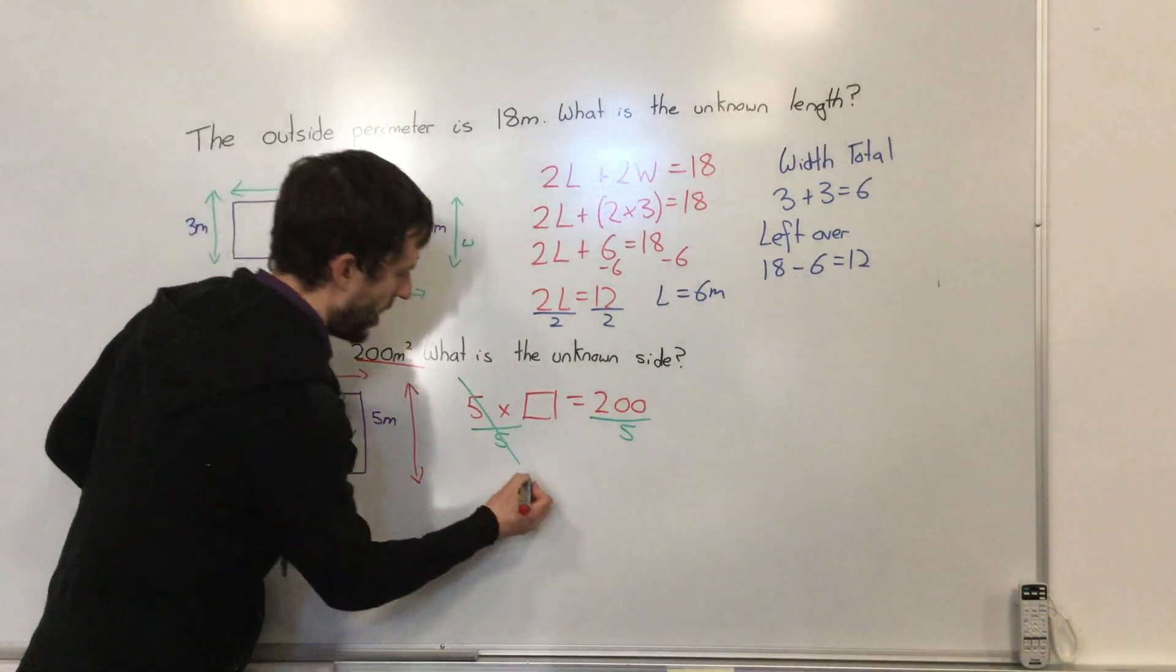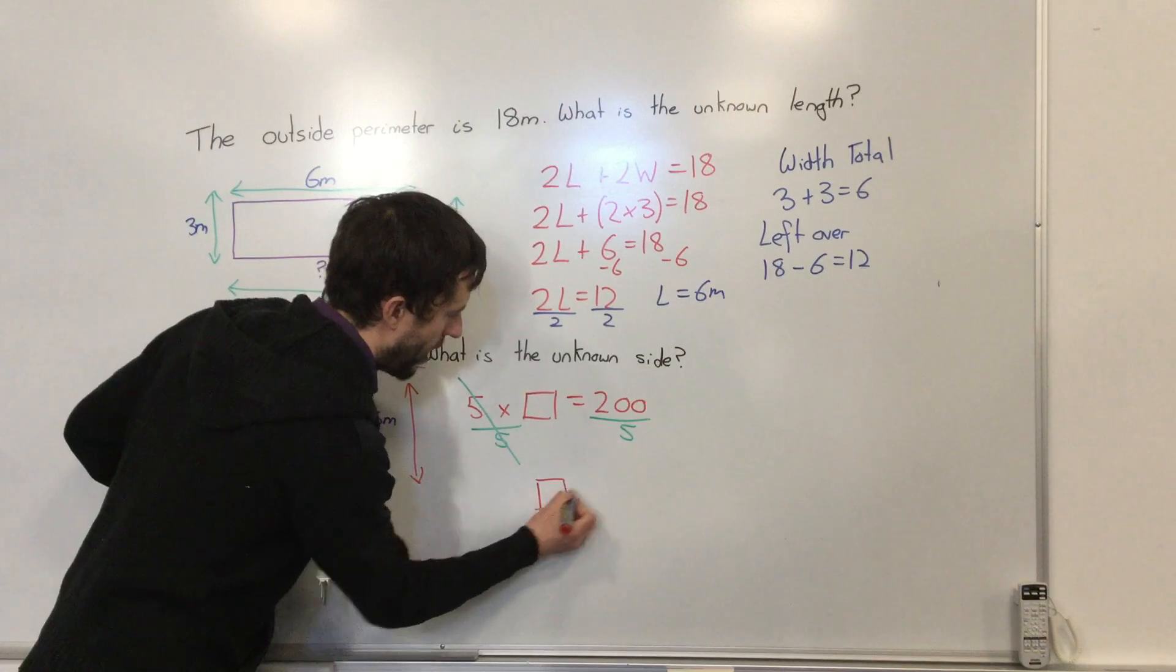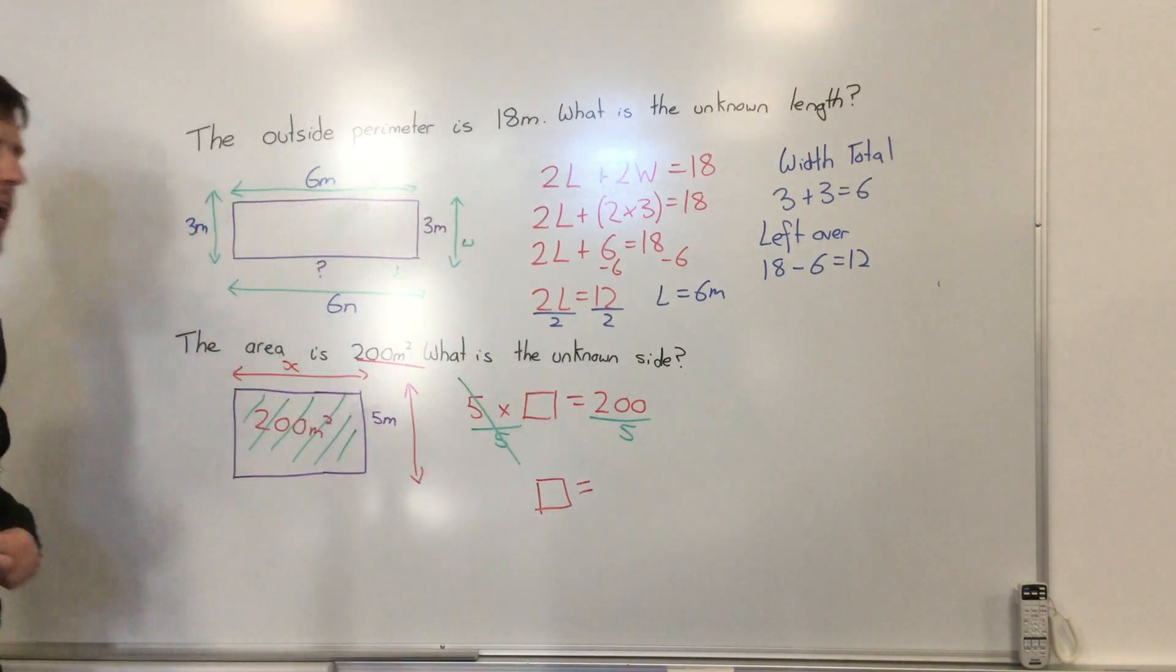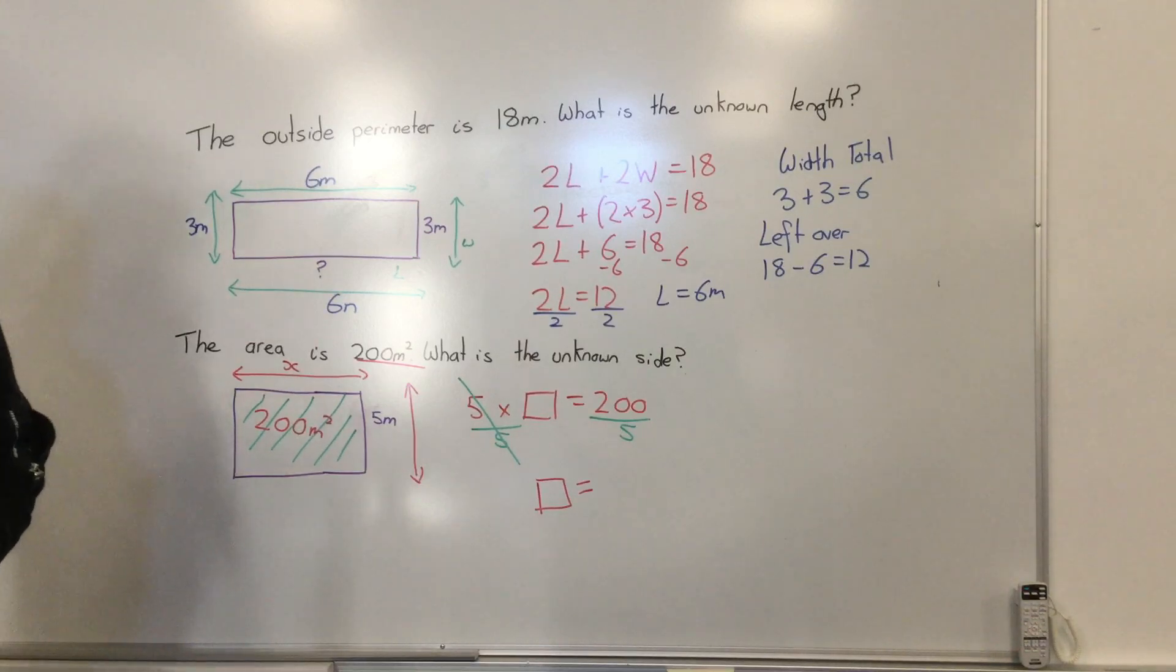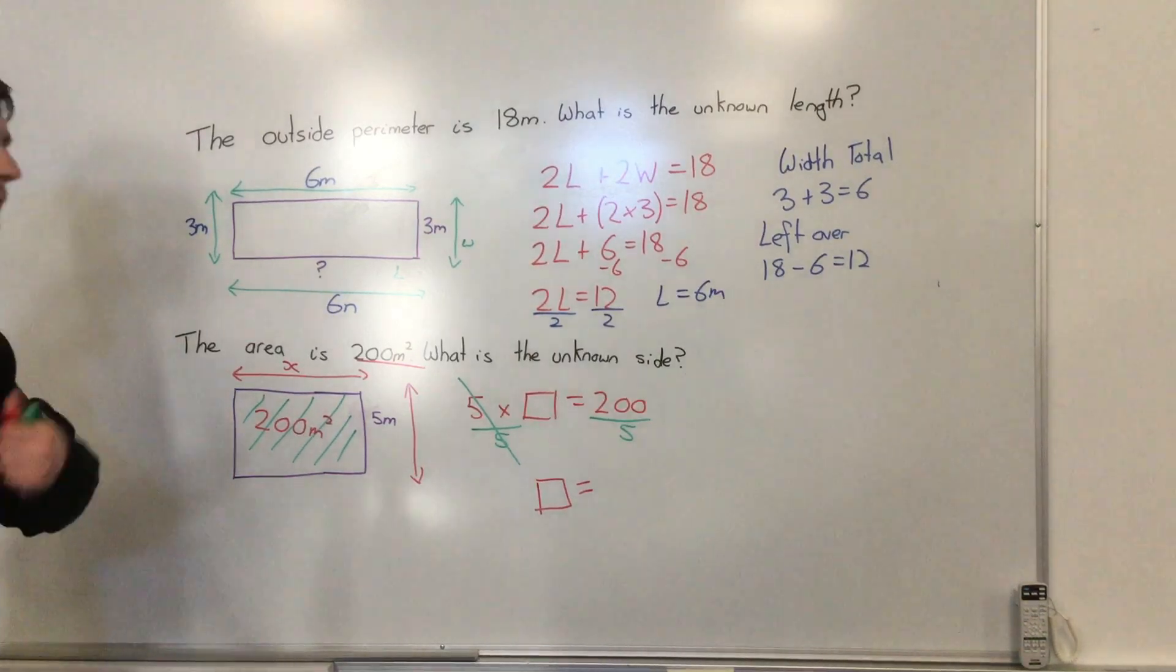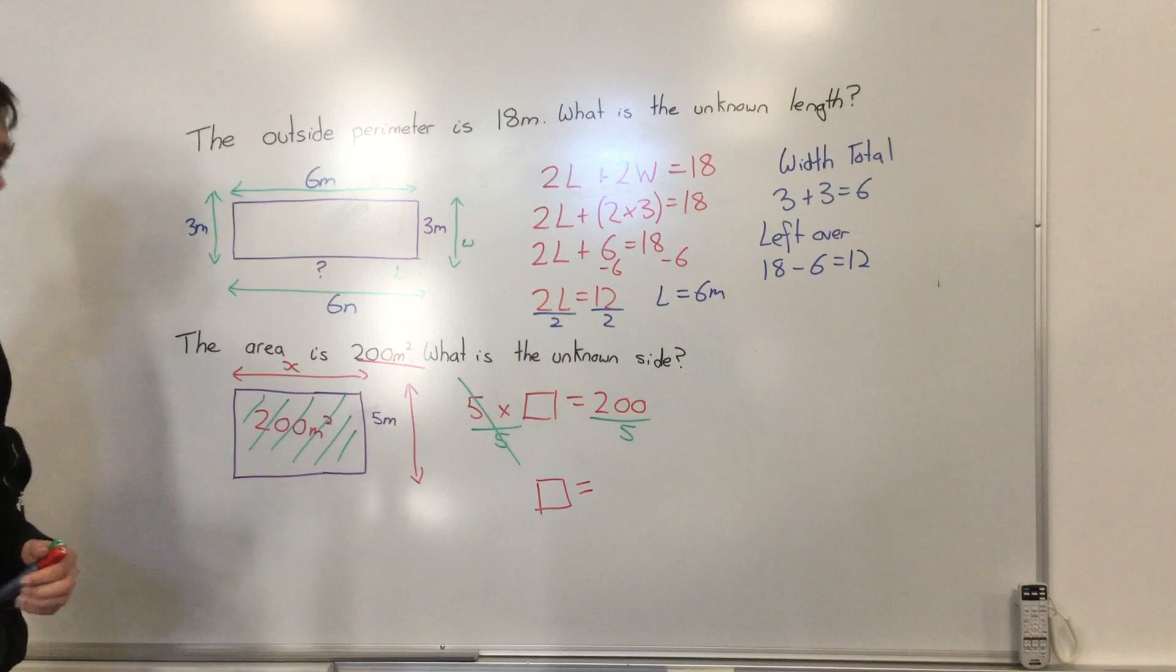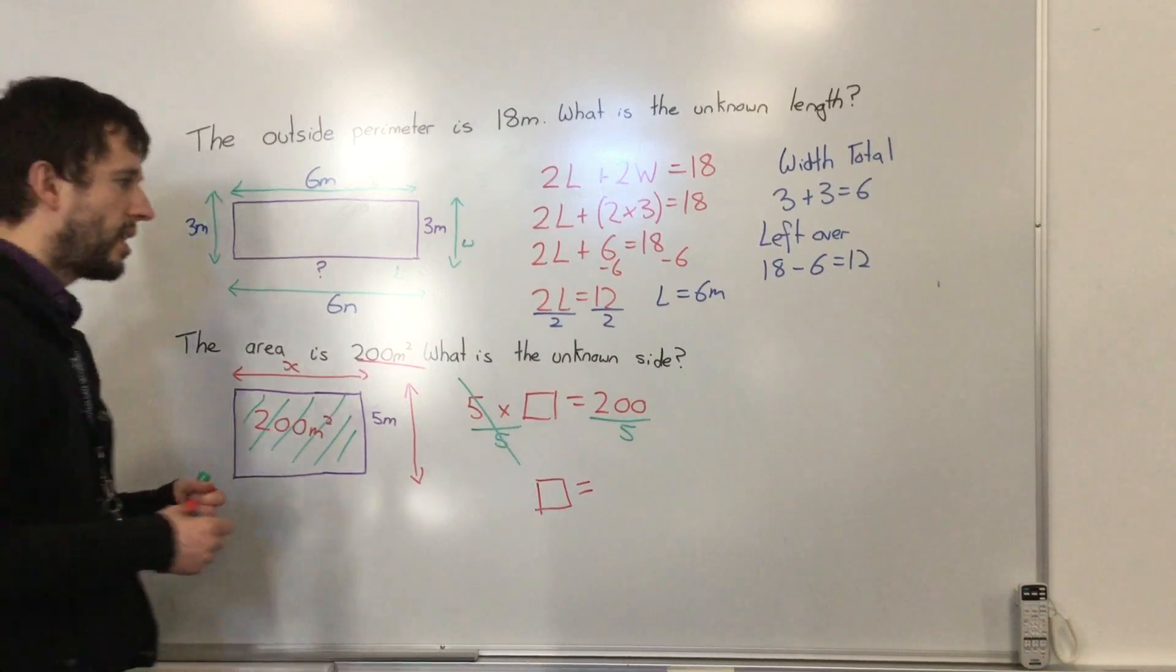That gives us this side by itself. And now we've just got, if I've got 200 and I am dividing by 5, how much do I have? And the answer is 40.